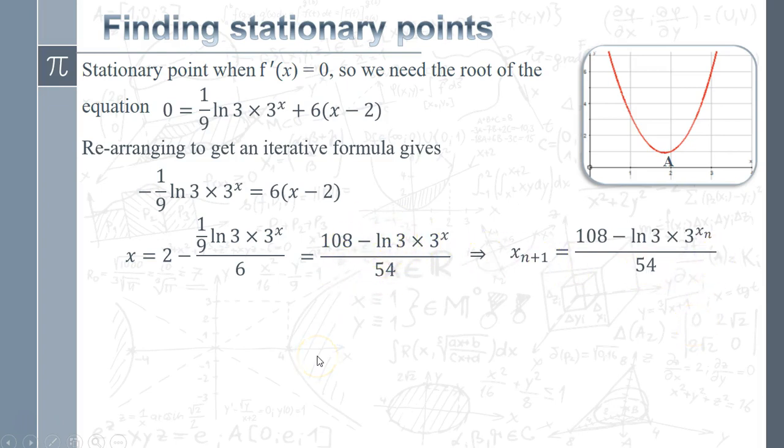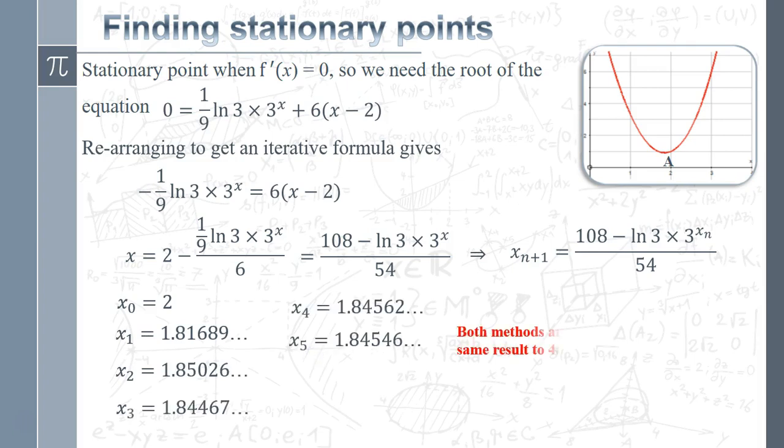Let's start off with a starting value of 2, stick that into the calculator, type in the formula, let the calculator do all the hard work, just repeat pressing the equals button. You'll notice by the time we get to x₅, we've now got both methods giving exactly the same result to four decimal places. Our stationary point occurs when x equals 1.8455.